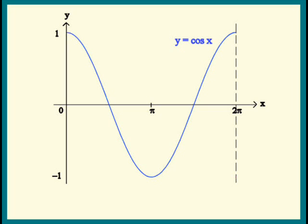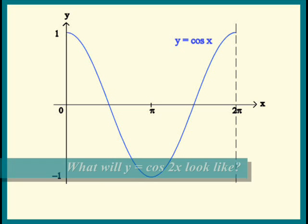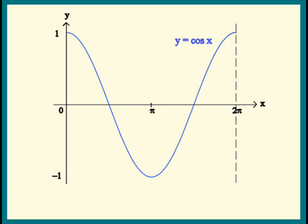So what happens if we have cosine of 2x instead? As x goes from 0 to 2 pi, what does 2x do? It goes from 0 to 4 pi. So cosine of 2x will end up going through two complete cycles.